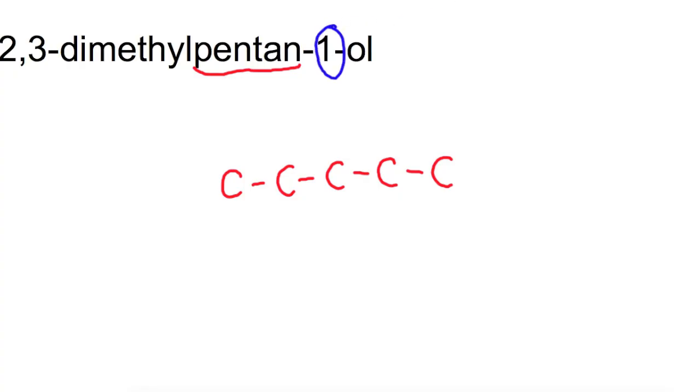For your numbering you've got a one here. So that's telling you on the first carbon you must have your OH group. So I'm just going to put it at this end. So here's our first carbon. In terms of numbers it's also telling you on carbons two and three you have a methyl group. So we've got two methyls. So if this is carbon one this will be carbon two here. So we're going to have a methyl group here. This is carbon three. So we'll have another methyl group here.